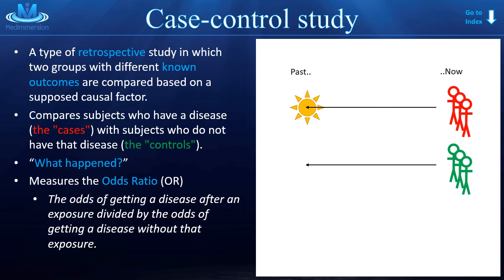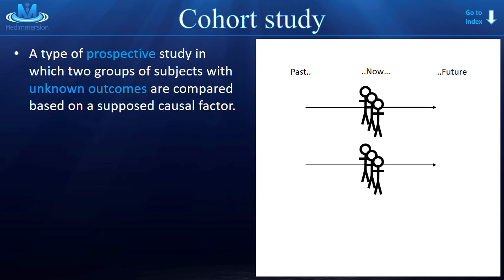Now into the cohort study. A cohort study is a type of prospective study. Basically, we're looking into the future now, in which we take two groups of subjects with unknown outcomes. And of course, that makes sense because the future hasn't happened yet. We're looking into the future. We don't know what's going to happen. But we're comparing these two groups based on what we suppose is going to be a causal factor.